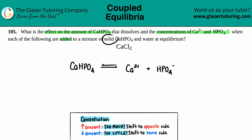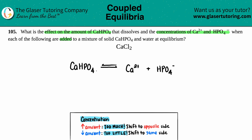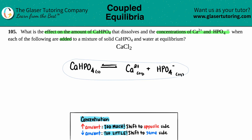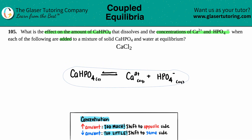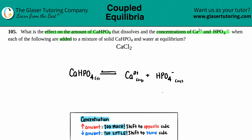CaHPO4 was stated to be a solid, so it gets the label (s). Since there are charges on the products, those are aqueous. Looking across, the equation is already balanced, so we don't have to do anything. That equation is done.